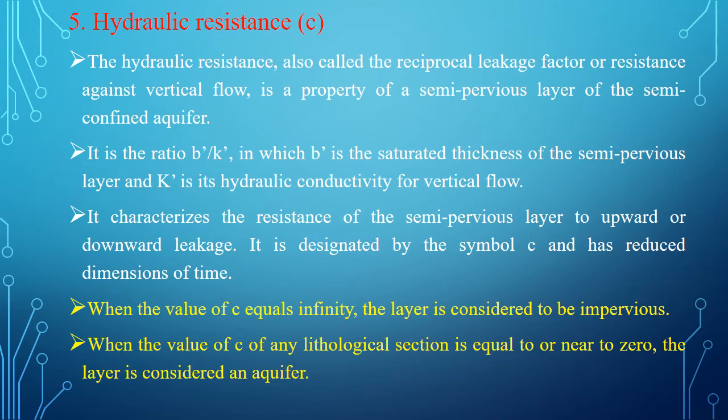The next important property is hydraulic resistance, also called the reciprocal leakage factor or resistance against vertical flow. It is a property of the semi-pervious layer of the semi-confined aquifer. It is the ratio of B' upon K', in which B' is the saturated thickness of the semi-pervious layer and K' is the hydraulic conductivity of the semi-pervious layer. It is designated by the symbol C and has reduced dimensions of time. When the value of hydraulic resistance equals infinity, it indicates the layer is impervious. When the value equals 0 or near 0, it indicates an aquifer.